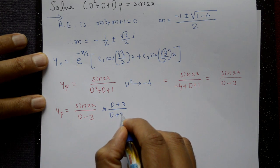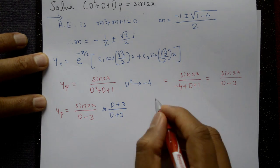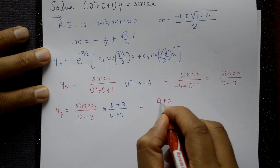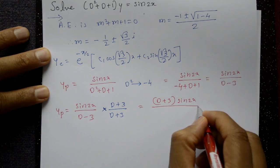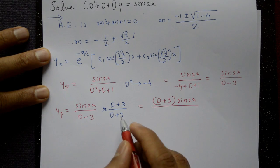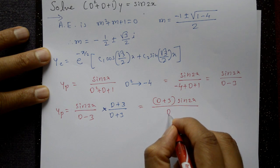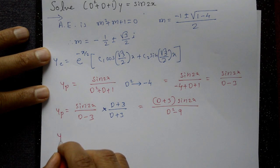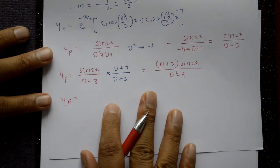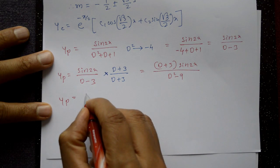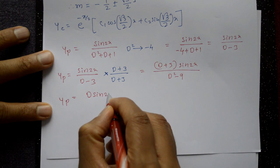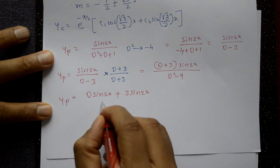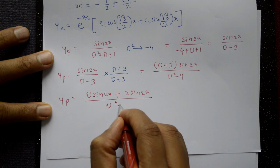Multiplying numerator and denominator by (D + 3): yp = (D + 3)sin2x / (D² − 9), using the difference of squares identity (a−b)(a+b) = a² − b². Expanding the numerator: D·sin2x + 3·sin2x, all divided by D² − 9.